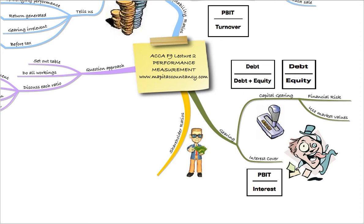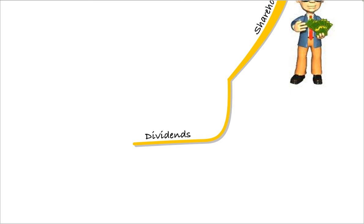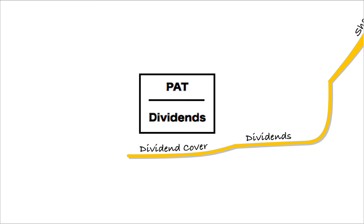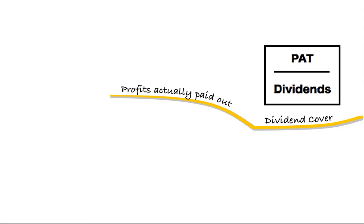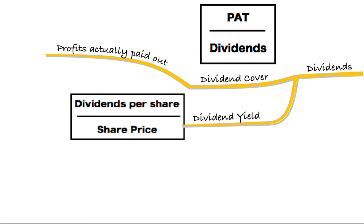Moving on to some of our shareholder ratios. We talked first of all about dividends and we looked at two ratios. Firstly, dividend cover — similar to interest cover, how many times are we covering the dividends that we've announced? It's our profit after tax over our dividends, comparing dividends to the profits and how much of our profit we've actually paid out. We also talked about dividend yield, which is a measurement investors will look at to compare with other investments — how much will the dividend payout be compared to what they had to invest? It's dividends per share over the share price.